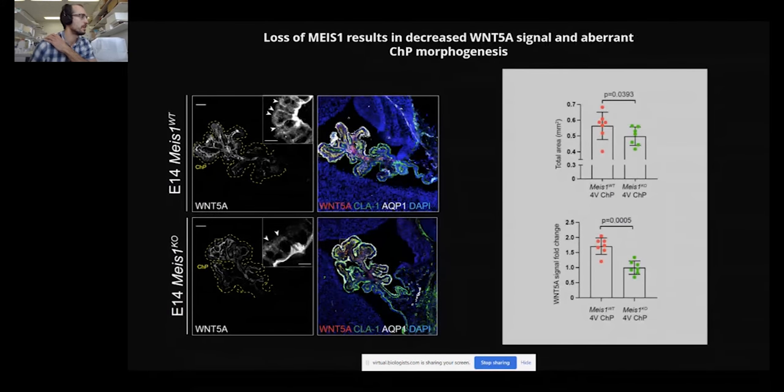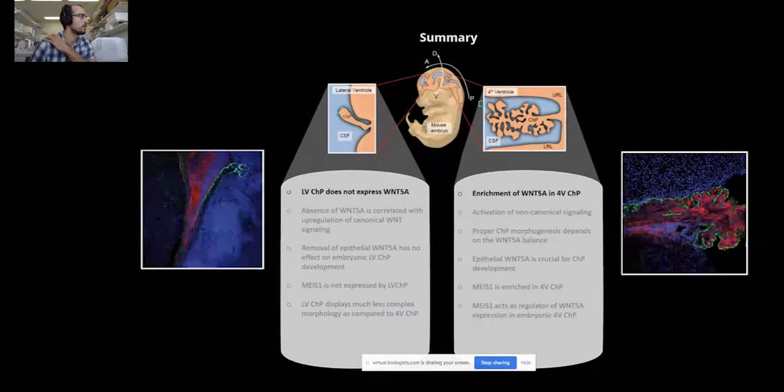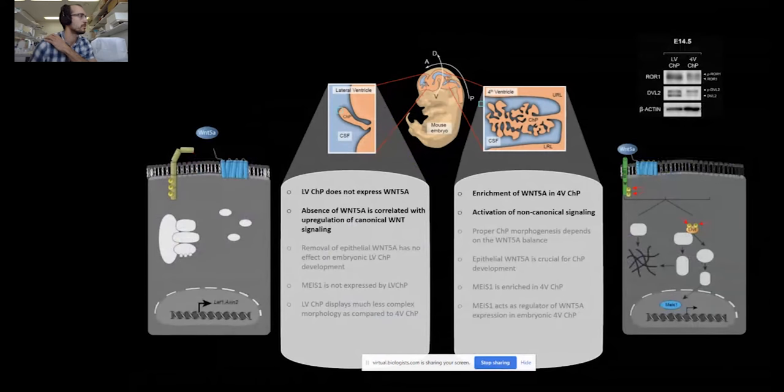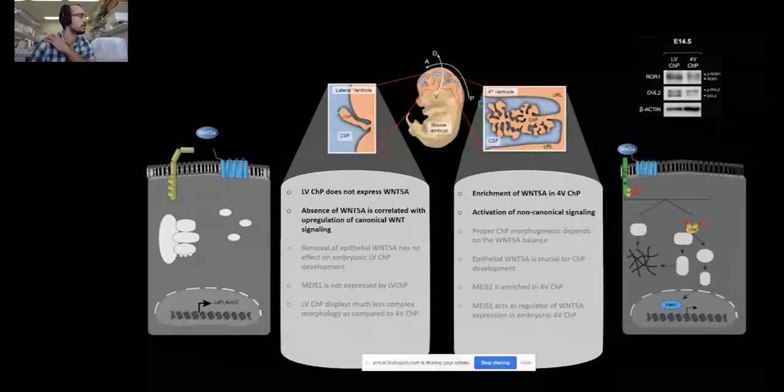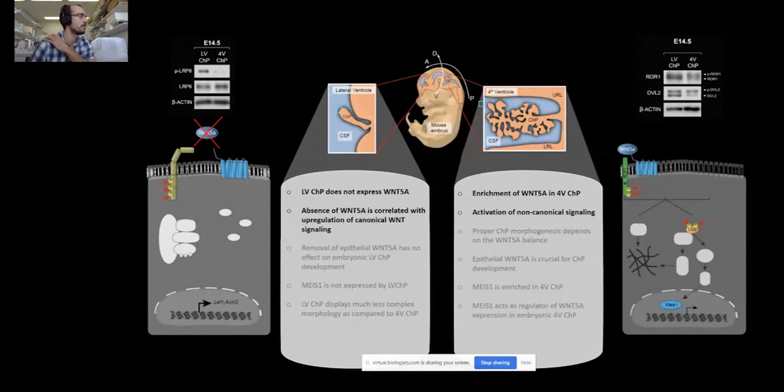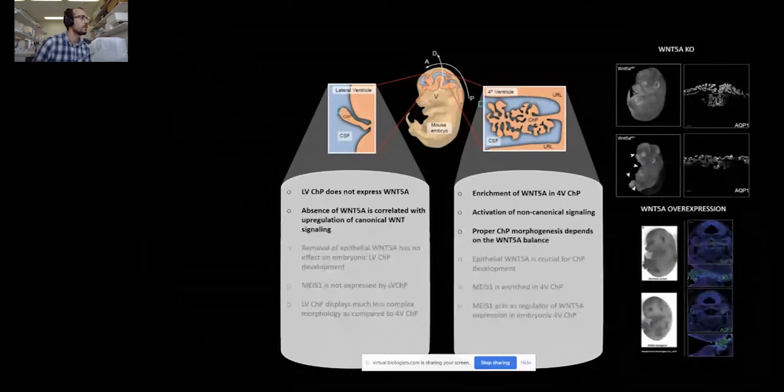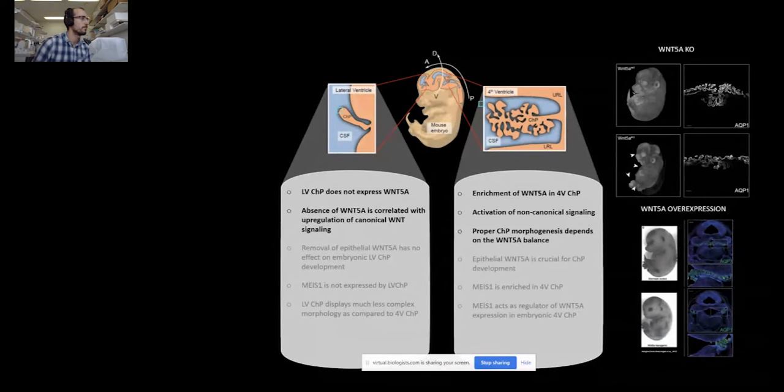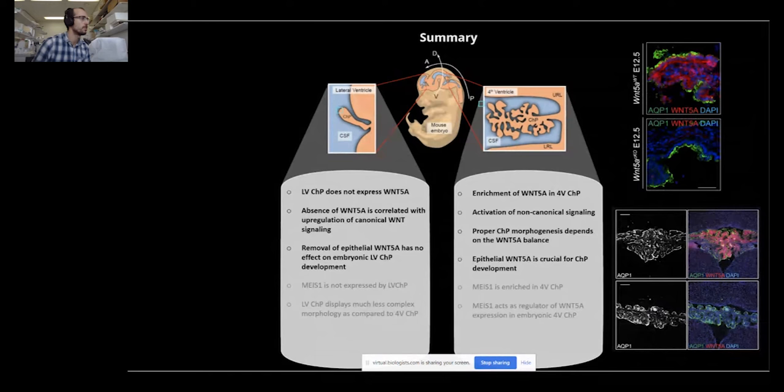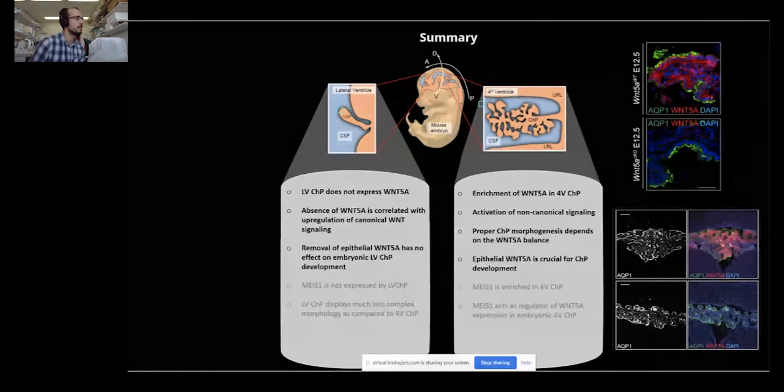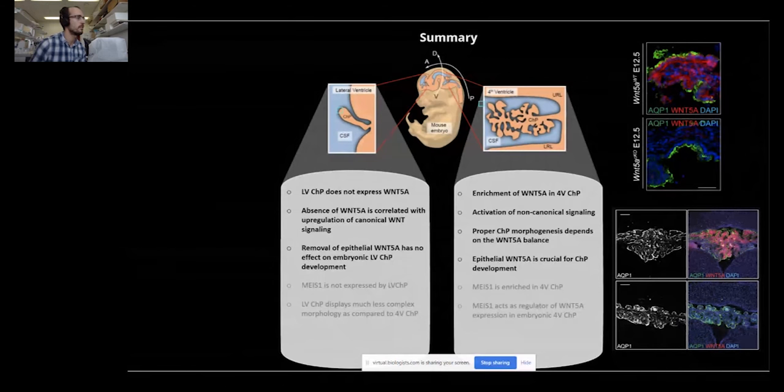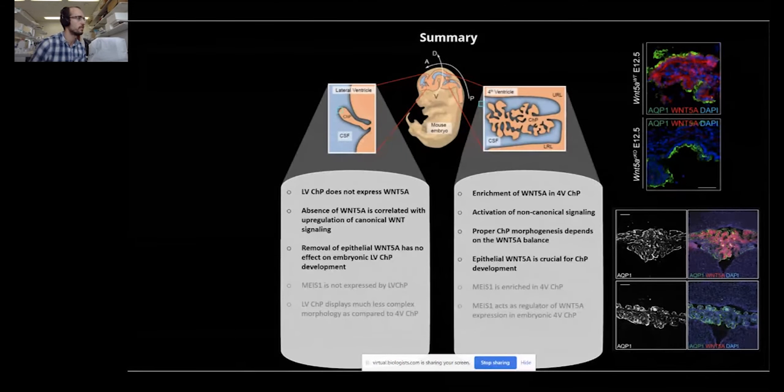To sum up, we showed that WNT5A is enriched in the fourth ventricle choroid plexus as compared to the lateral ventricle plexus. We also showed that there is a distinct pattern of non-canonical and canonical WNT activation in different plexuses. We also noticed that WNT5A balance is crucial for the proper development of the tissue, and we also proved that epithelial WNT5A is the culprit driving this WNT5A-specific effect on plexus development.